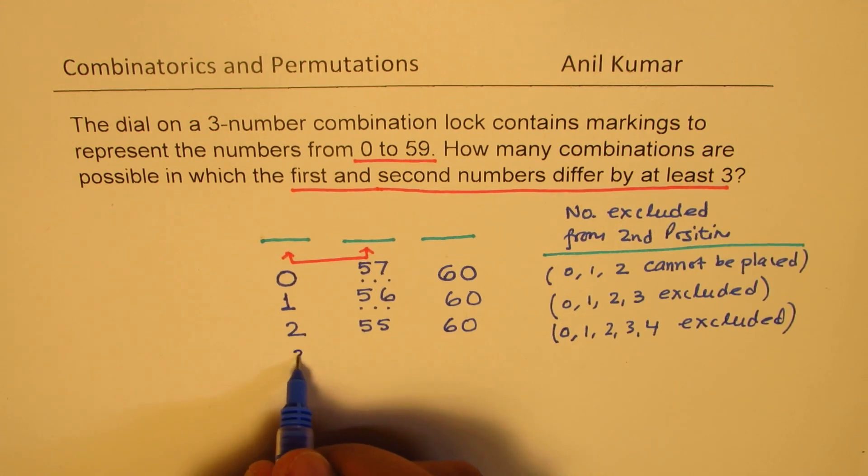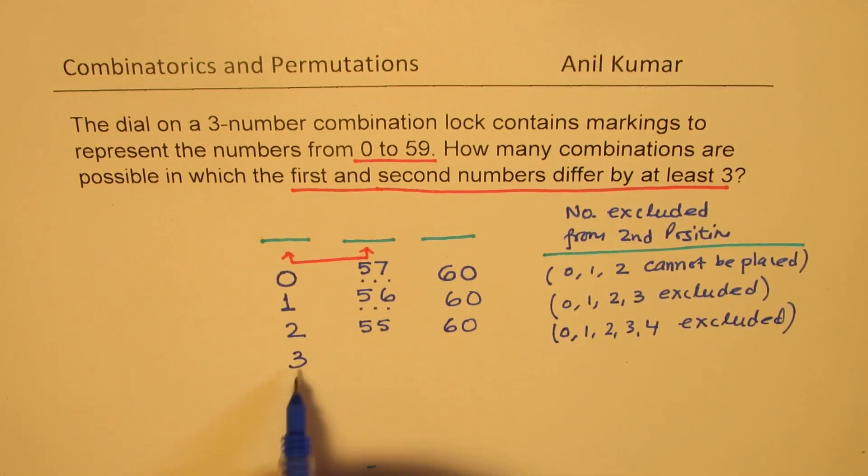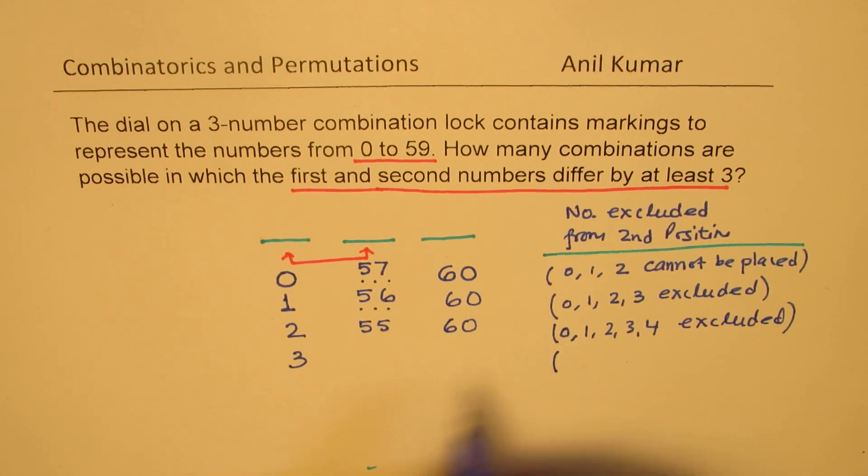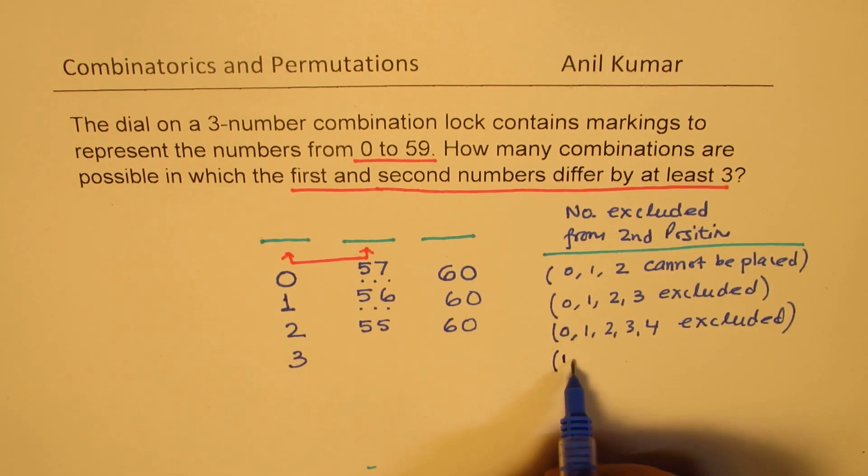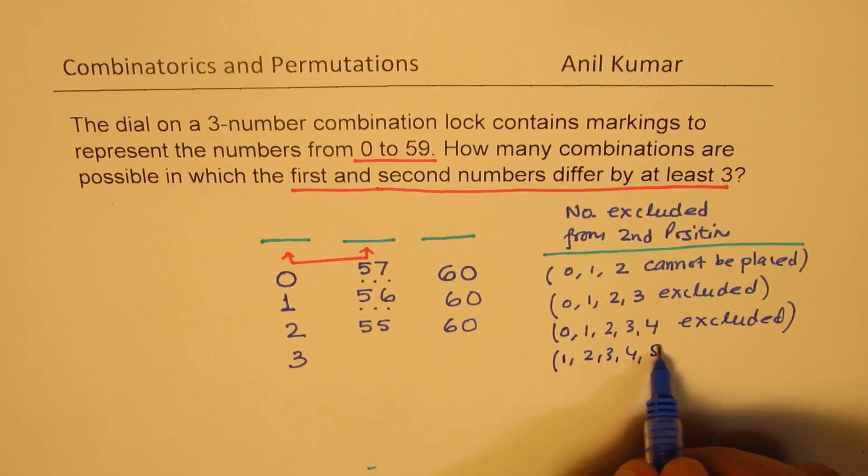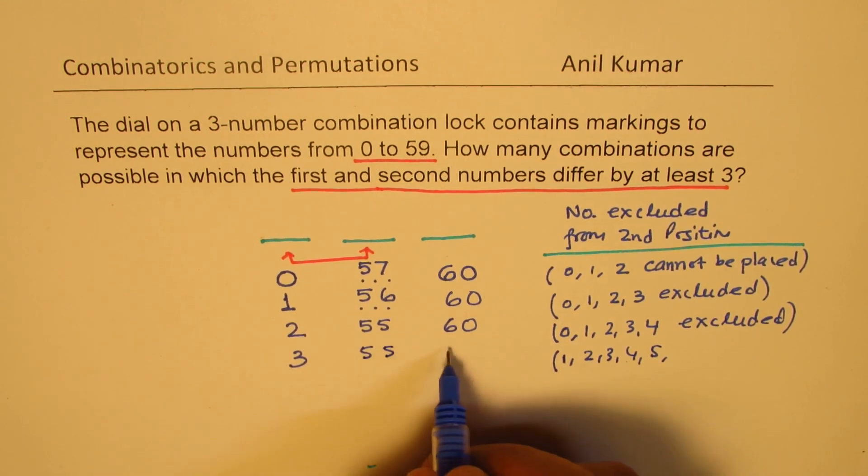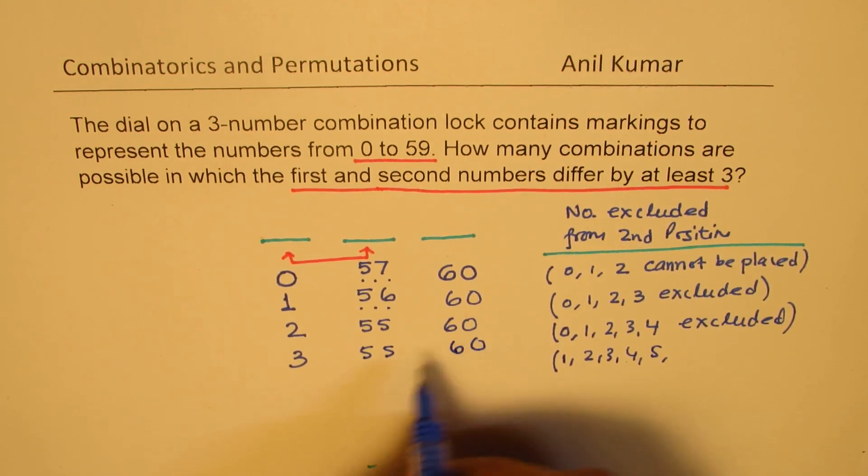Now see what happens when I place 3. When I place 3, in that case, I can place 0, because 0 to 3 is a difference of 3. So I will not be able to place 1, 2, 3, 4, 5, but I can place 6. So 1, 2, 3, 4, 5. So again, we get this combination 55 and 60.